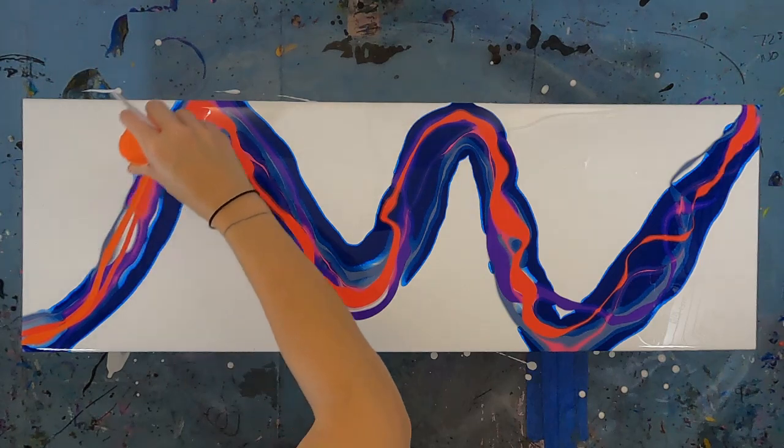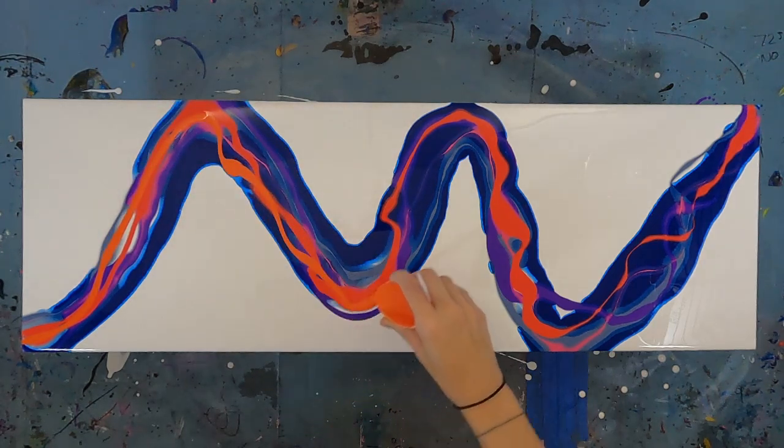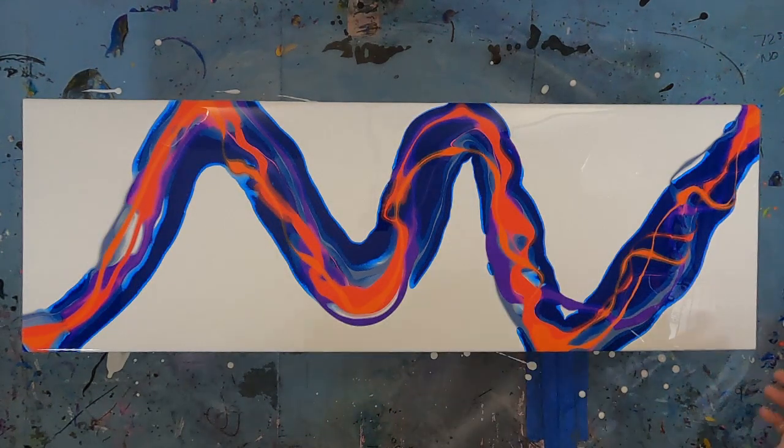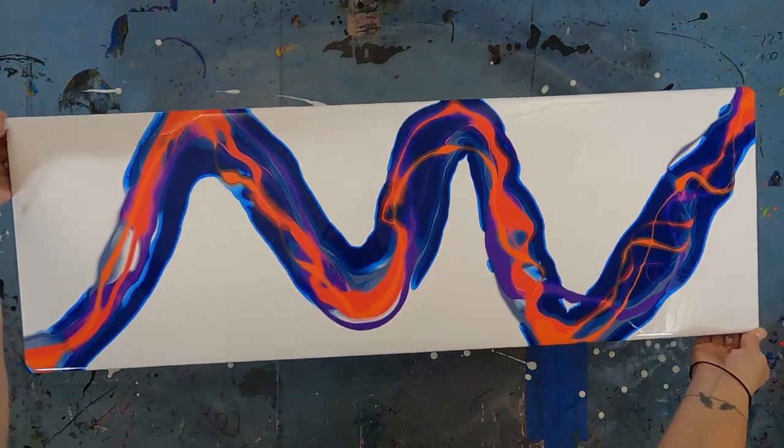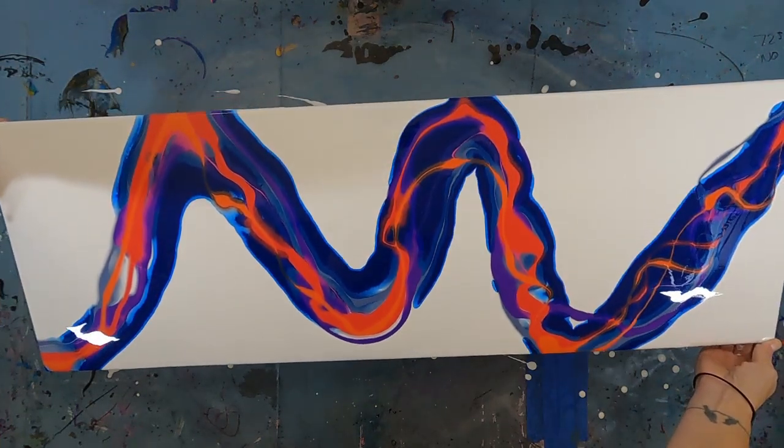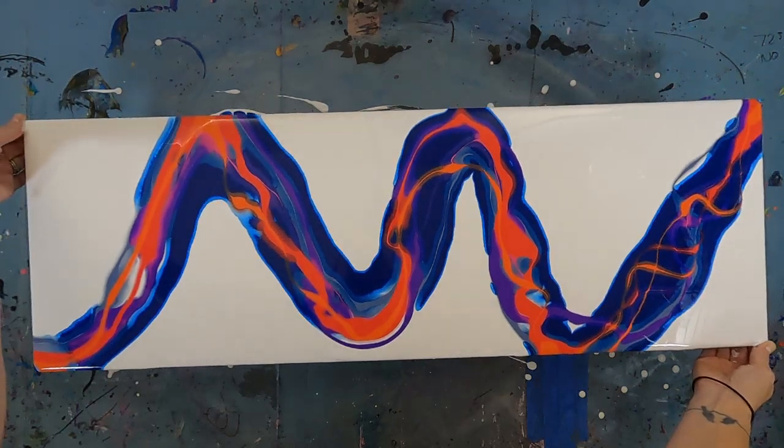If you have some that are slower than others, add a bit more water or pouring medium to the mix and test again. Have some that are running way faster than the others? Try adding a bit more paint to the mix before testing once more.